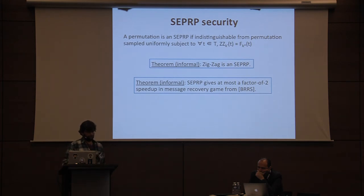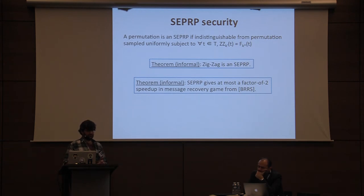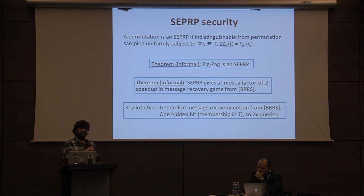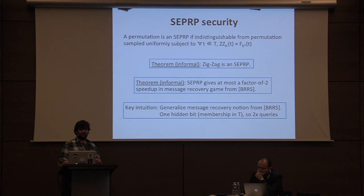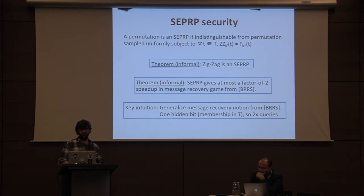Intuitively, a permutation is an SEPRP if it's indistinguishable from a permutation sampled uniformly subject to our functionality requirement. We prove that zigzag meets SEPRP security in the domain extension setting. We also prove that any SEPRP cipher gives any adversary at most a factor-of-two advantage in message recovery games. We generalized the message recovery notion from Belare et al.'s prior work on FPE to accommodate domain extension — the only information hidden from the adversary is membership in T, essentially one hidden bit, requiring at most twice as many queries.